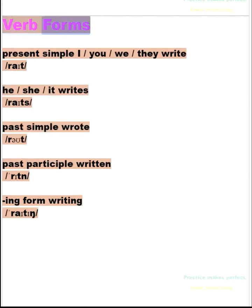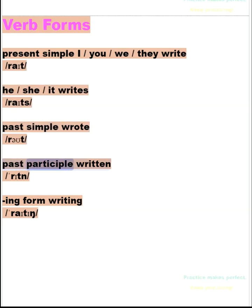Verb forms. Present simple: I, you, we, they write. He, she, it writes. Past simple: wrote. Past participle: written. -ing form: writing.